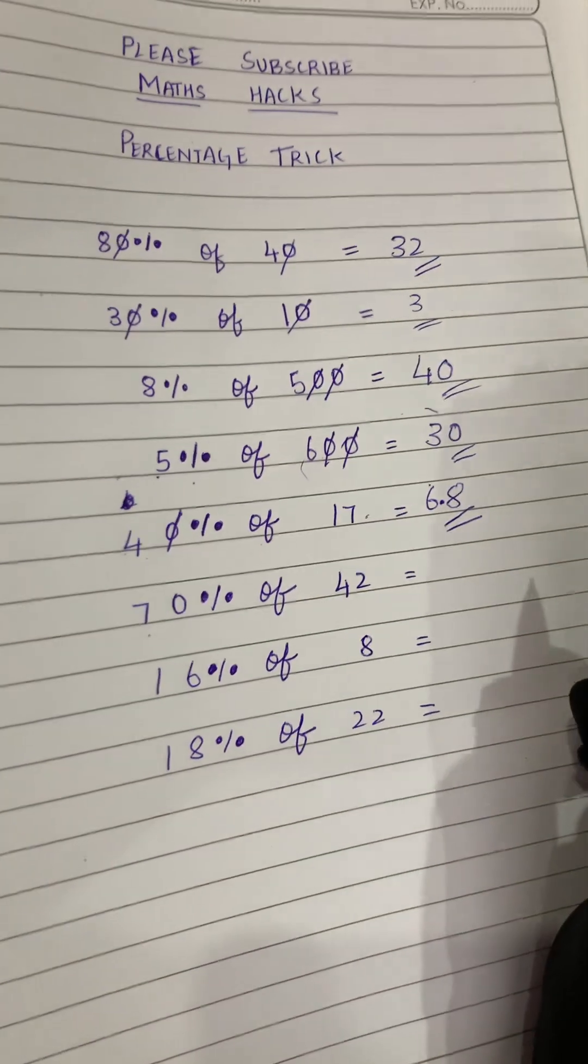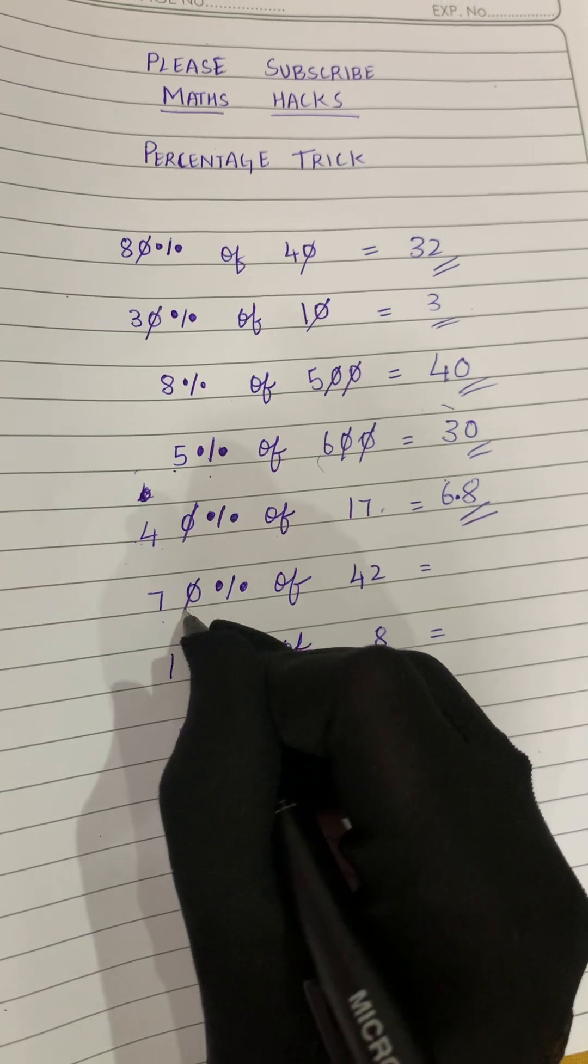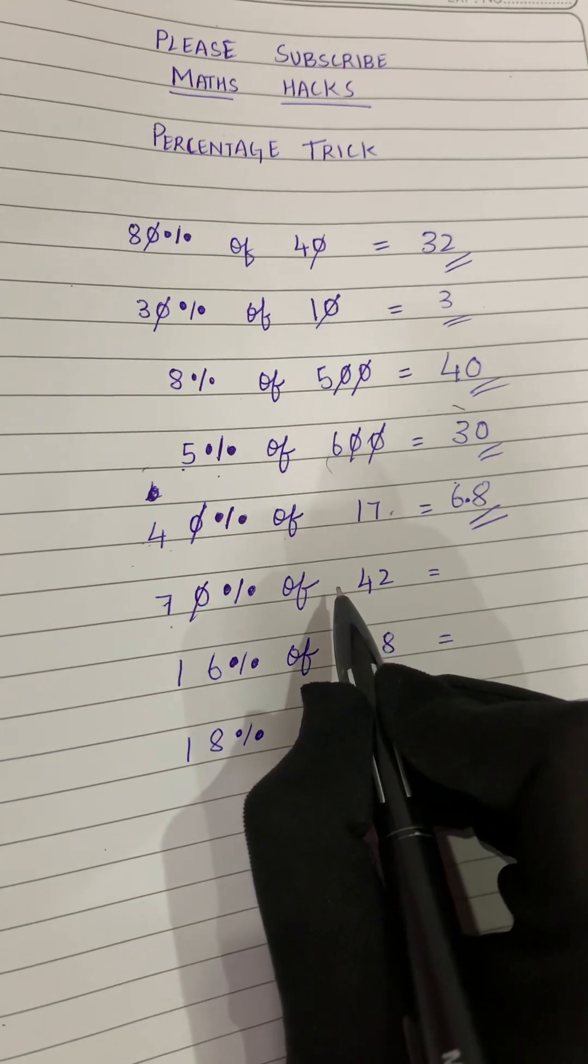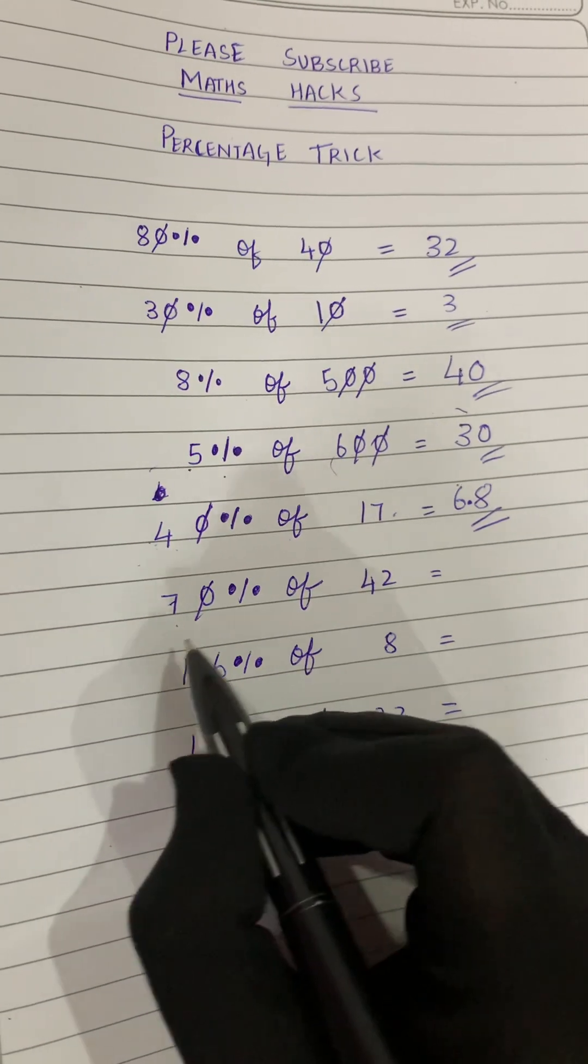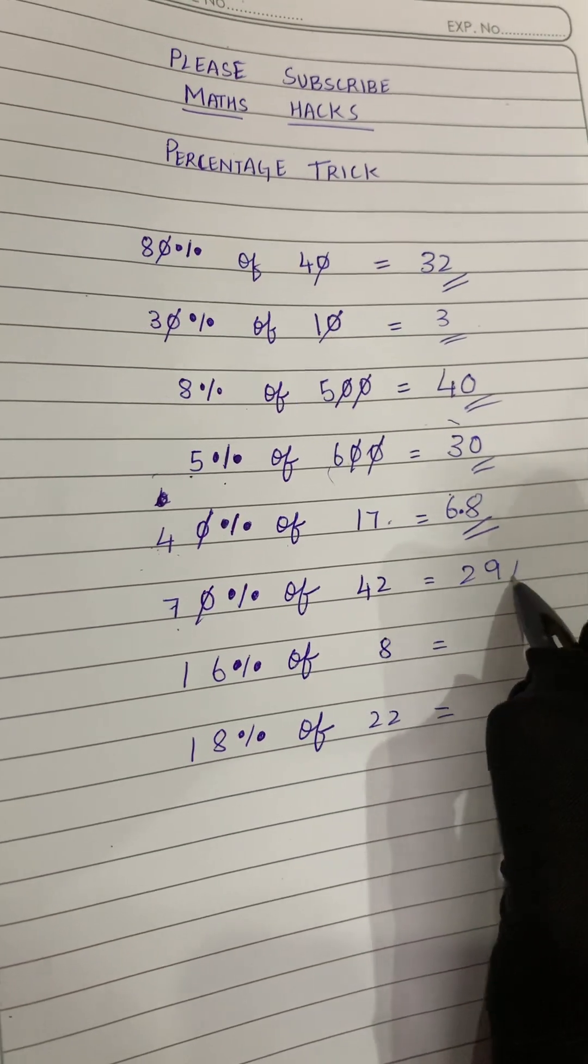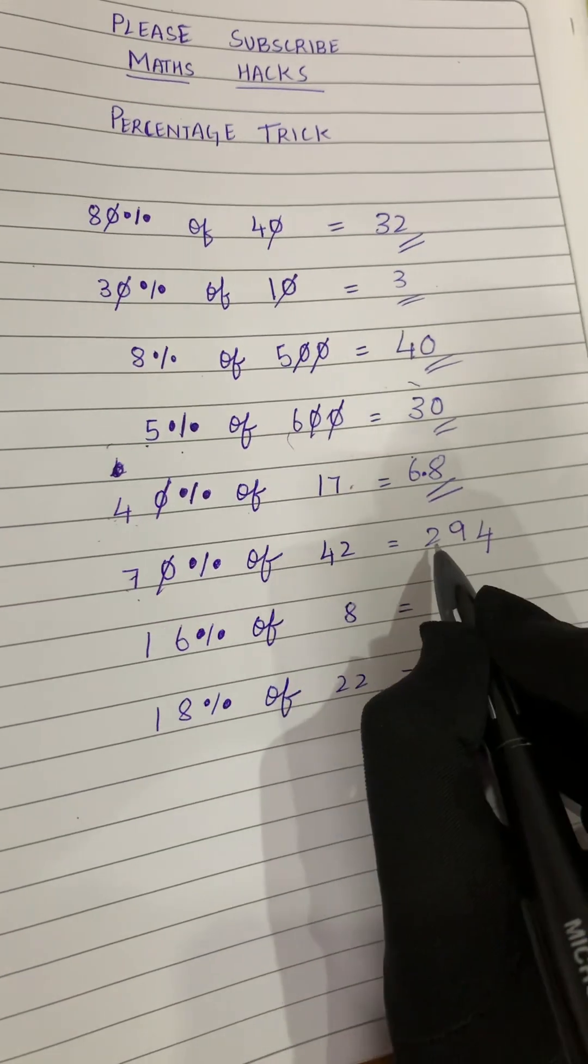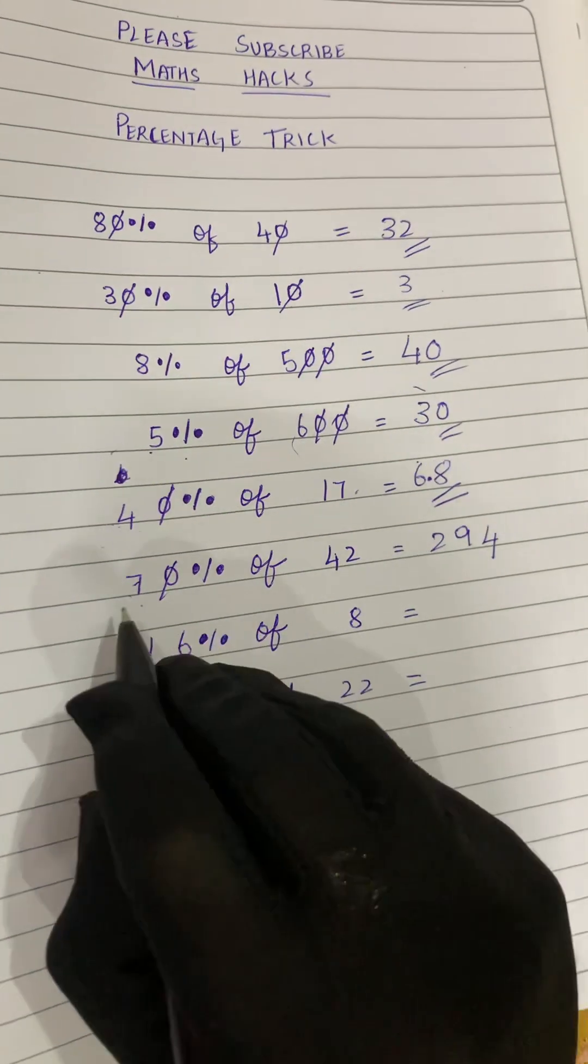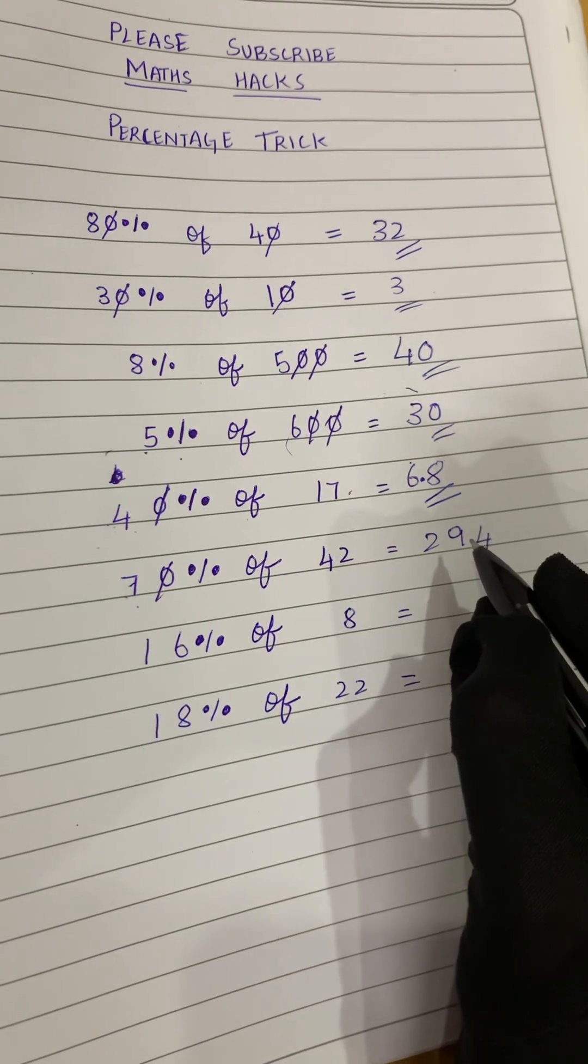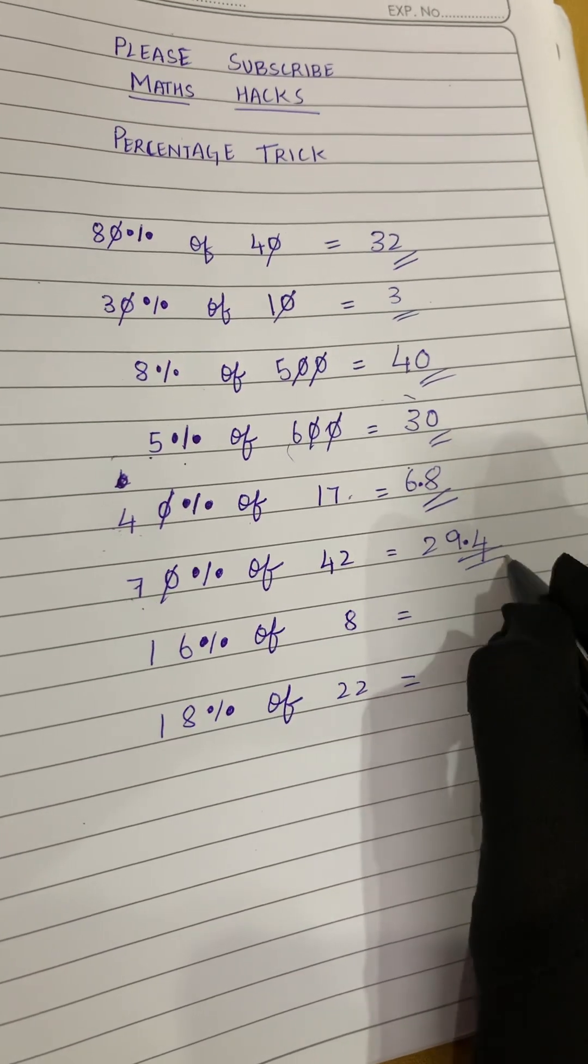Now 70 percent of 42. We will cancel this zero. What is left? 7 and 42, right? So 7 into 42 is 294. We have to multiply 7 and 42. 7 into 42 is 294. What is the digit here? Only one digit we have, so we will put a point after one digit.